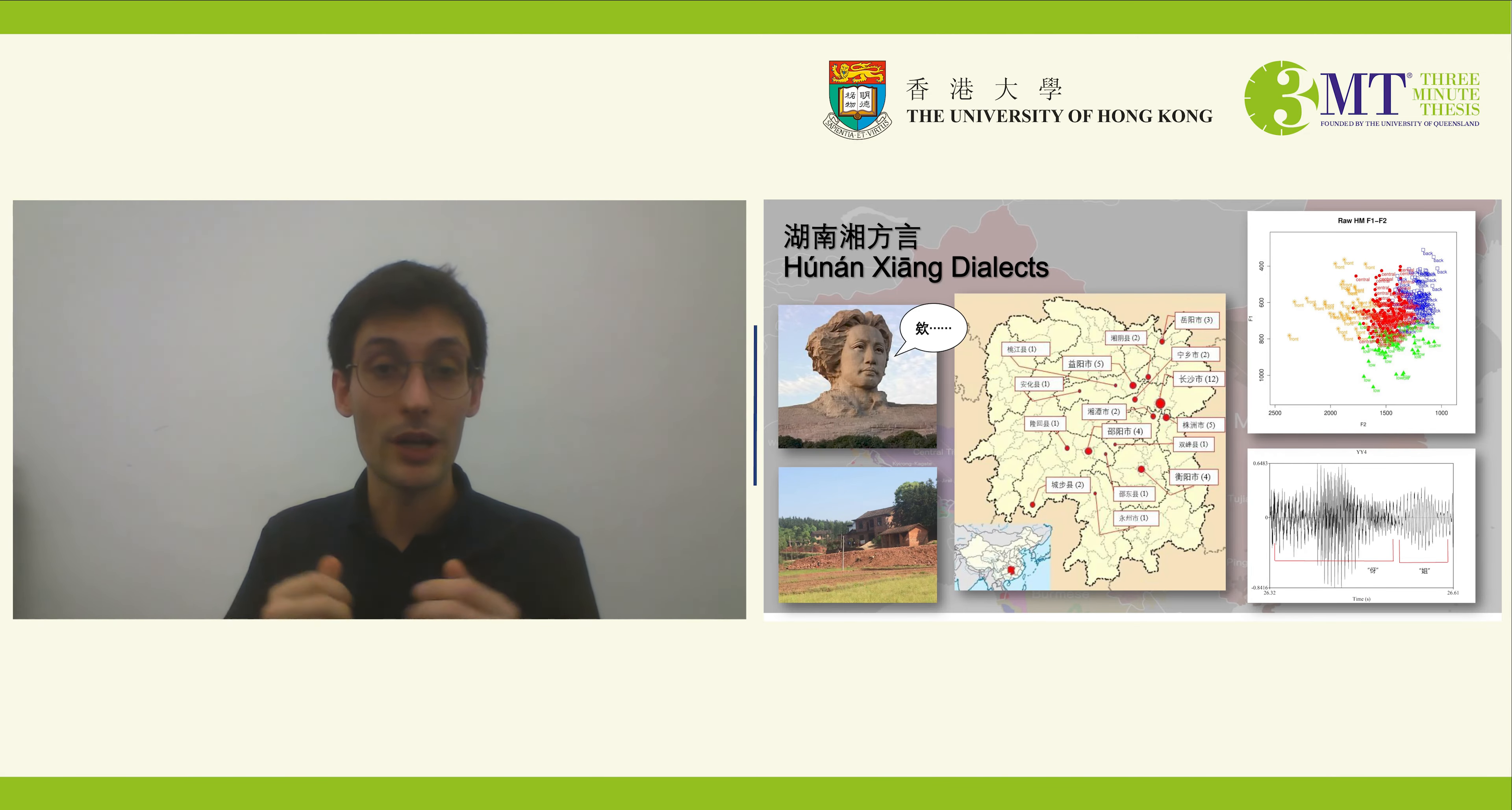It may surprise some of you to learn that Chairman Mao's native language was not in fact Mandarin, but was rather a variety of Chinese known as Xiang, which is natively spoken in Hunan province.